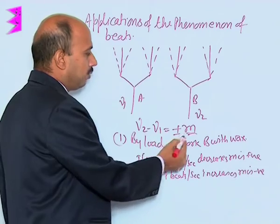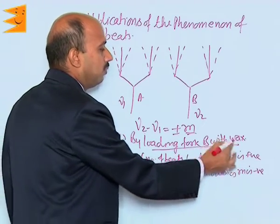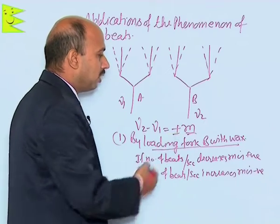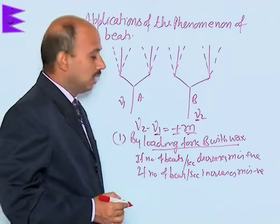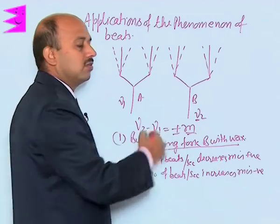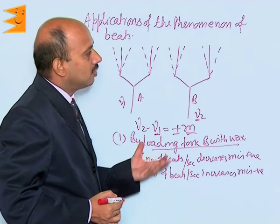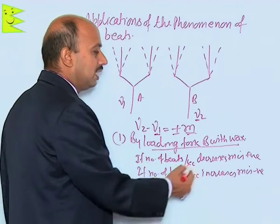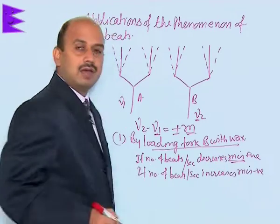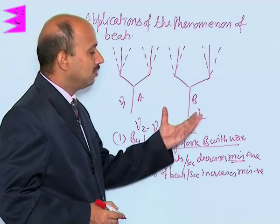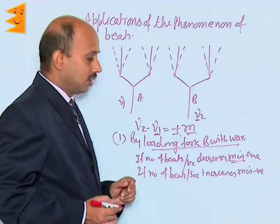For nu2 equals nu1 plus or minus m, the first method is by loading fork B with wax. We decide the sign of m, or the sign of the beat frequency, whether it will be positive or negative. When the unknown tuning fork B is loaded with wax, it becomes heavier and its frequency decreases. If the number of beats per second decreases by loading, then we take m as positive. If the number of beats per second increases, then we take m as negative.